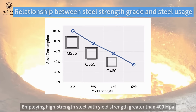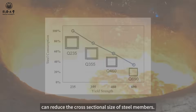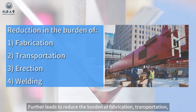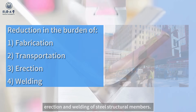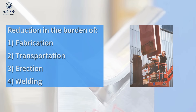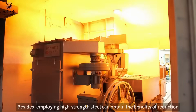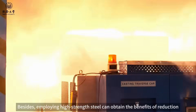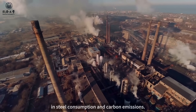Reducing cross-sectional size further leads to reducing the burden of fabrication, transportation, erection, and welding of steel structural members. Besides, employing high-strength steel can obtain the benefits of reduction in steel consumption and carbon emissions.